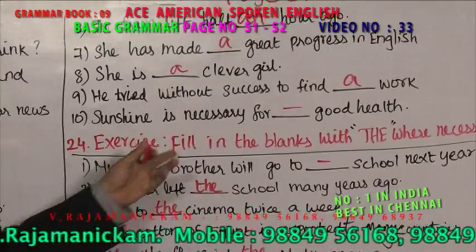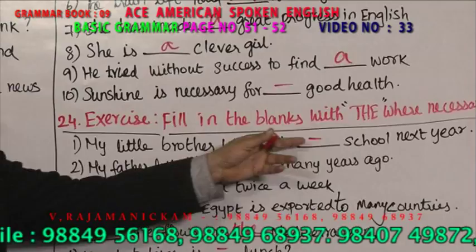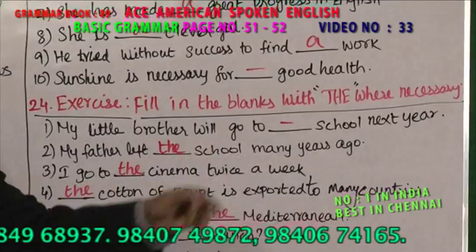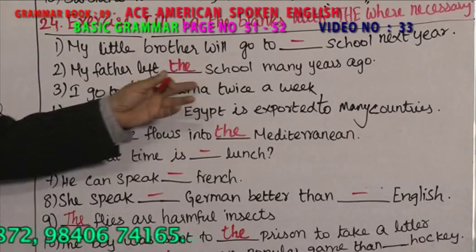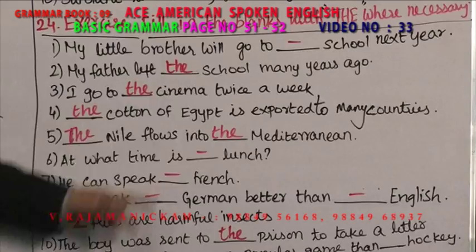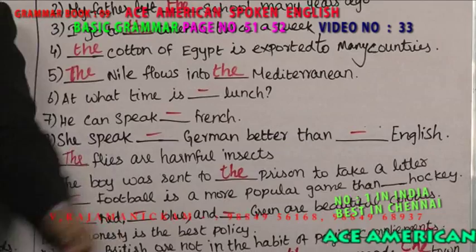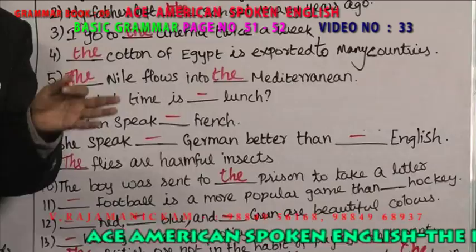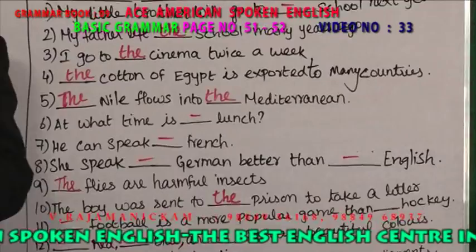Fill in the blanks with 'the' where necessary. My little brother will go to school next year — not 'the school.' My father left the school many years ago. Why not 'the' in the first and 'the' in the second? Because in the second sentence, you are referring to a particular school. My brother will go to school generally — general schools. But my father left the particular school many years ago.